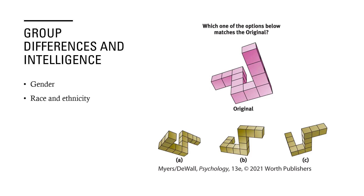Intelligence tests are notoriously biased. A test is biased if its scores are influenced by the test taker's cultural experiences. IQ tests often measure test takers' developed abilities, which reflect their education and experiences. A test given to someone who grew up in Iceland may not be appropriate for someone who grew up in Argentina.